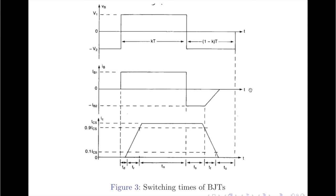Figure 3 indicates the switching times and waveforms of a power BJT. It should be noted that after the application of the base voltage, the transistor does not turn on immediately, because of the internal capacitances. The collector current does not rise even when the input base voltage rises from 0 to V1 and the base current rises from 0 to Ib1. There is a delay before the collector current response, called the delay time, denoted by td.